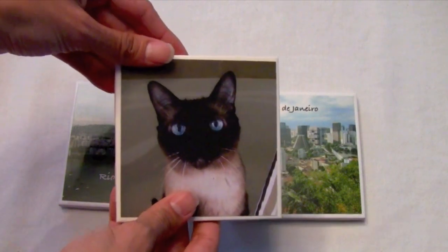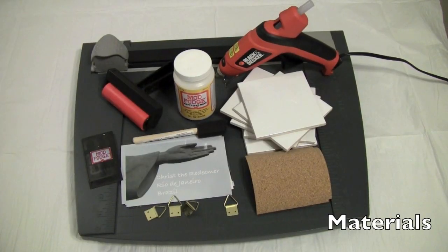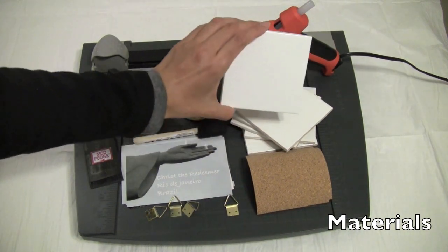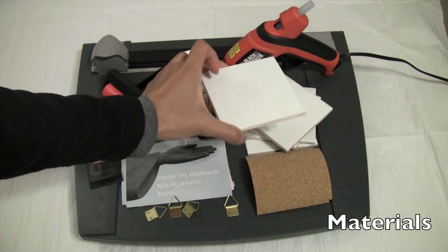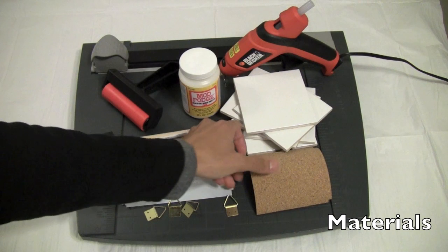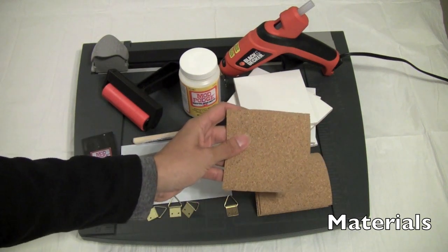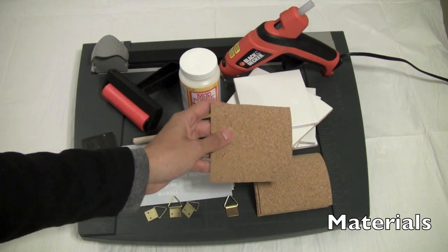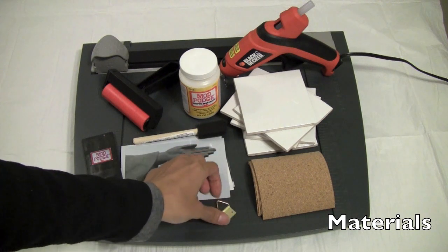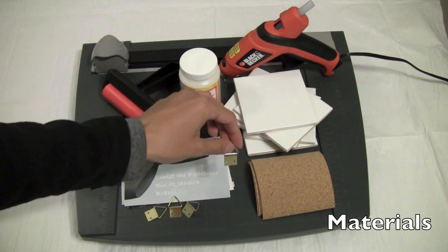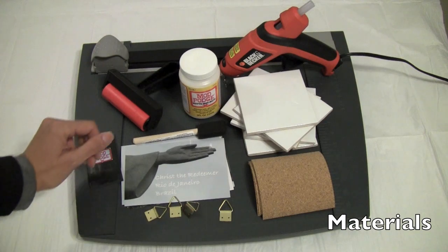You could also do one with your kids or grandkids. The materials used in this project are four by four white ceramic tiles. This is a cork backing that you can purchase at your local hardware store or craft store. These are the picture hangers. You can get this in the framing department of your local store.